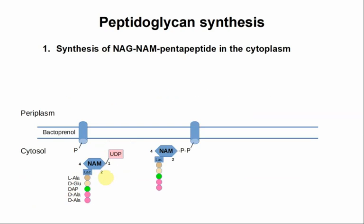The next step is that this whole thing is going to be connected to bactoprenol - this is the lipid part. Initially it's monophosphorylated with the phosphate group sticking out into the cytoplasm. After this step, you get bactoprenol pyrophosphate and then NAM and the pentapeptide. The other phosphate group comes from the UDP - uridine diphosphate. So you get bactoprenol pyrophosphate-NAM, and the other product is uridine monophosphate, UMP, which is released into the cytosol.